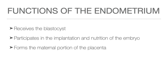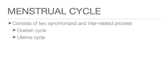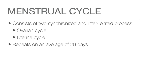The endometrium undergoes cyclic alterations in its histological appearance in response to repeating changes in hormonal levels. It is where the blastocyst or embryo implants and it contributes to the maternal portion of the placenta. The menstrual cycle consists of two synchronized and interrelated processes occurring in the ovaries and in the uterus. This cycle repeats on an average of 28 days, but normally ranges from about 25 to 30 days.